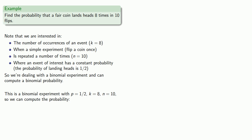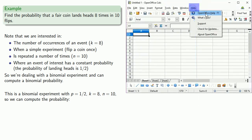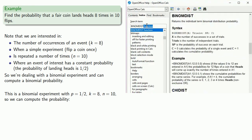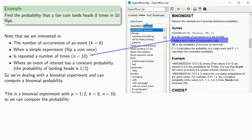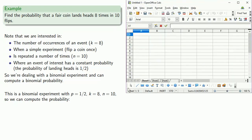Most spreadsheets, calculators, and statistical software have a built-in capability for calculating binomial probabilities — you just have to figure out how to use it. Once you identify n, k, and p and enter the correct information, the spreadsheet will calculate the probability for you.